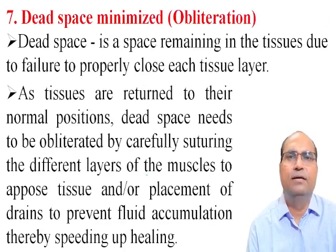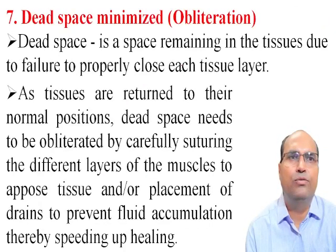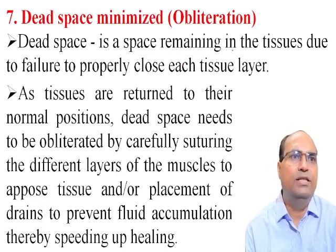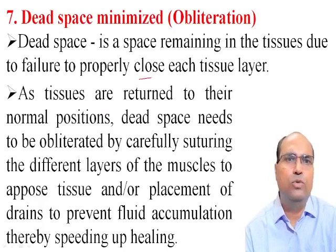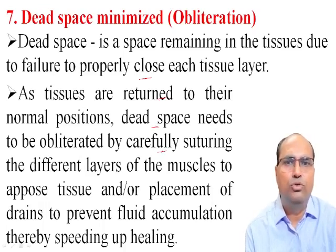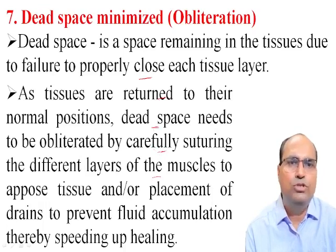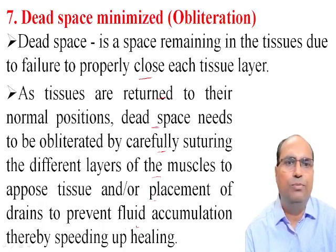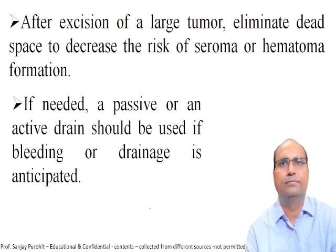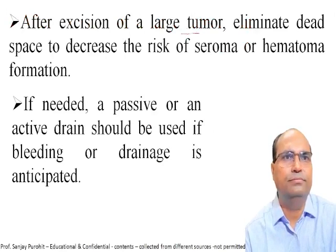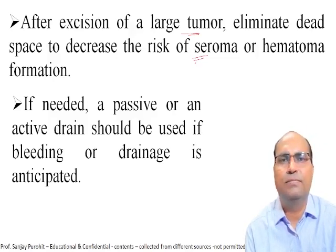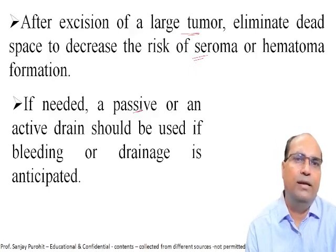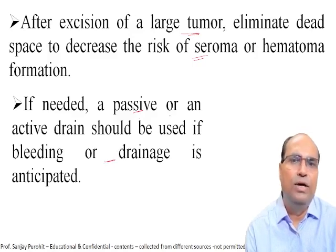The seventh principle of Halstead is dead space minimized, meaning obliteration of dead space. Dead space is the space remaining in the tissues due to failure to properly close each layer. As tissues are returned to their normal position, dead space needs to be obliterated by carefully closing the different layers of muscles to oppose the tissue, or placement of a drain to prevent fluid accumulation, thereby speeding up healing. After excision of a large tumor, eliminate dead space to decrease the risk of seroma or hematoma formation. If needed, a passive or active drain should be used if bleeding or drainage is anticipated.